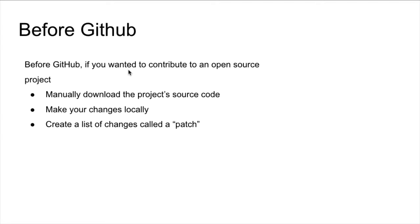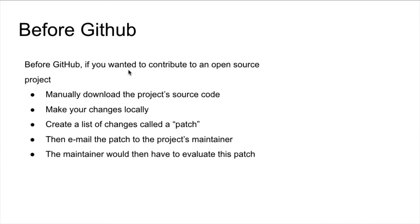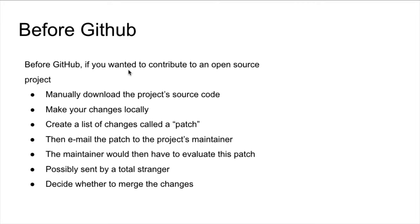After you've done that — this is before GitHub — you would email the patch to the project's maintainer, the person responsible for the project. Then the project maintainer would have to evaluate your change. They don't know you — you literally just emailed somebody with your own code, your own changes, and told them: hey, can you put this into your software for me? What if that person is a hacker? You don't know, because you're a total stranger. Anybody can create an email and send you some code. The maintainer needs to evaluate it and then decide whether or not they should be merging your code into the main code.